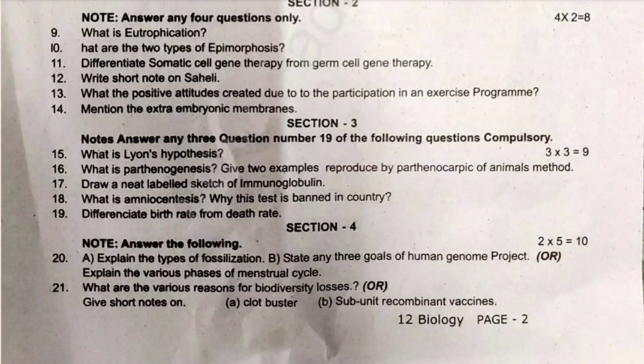You will need to explain the types of fossilization, state any 3 goals of the human genome project, explain the various phases of the menstrual cycle, water the various reasons of biodiversity loss, short note on clot buster, subunit recombination vaccines.